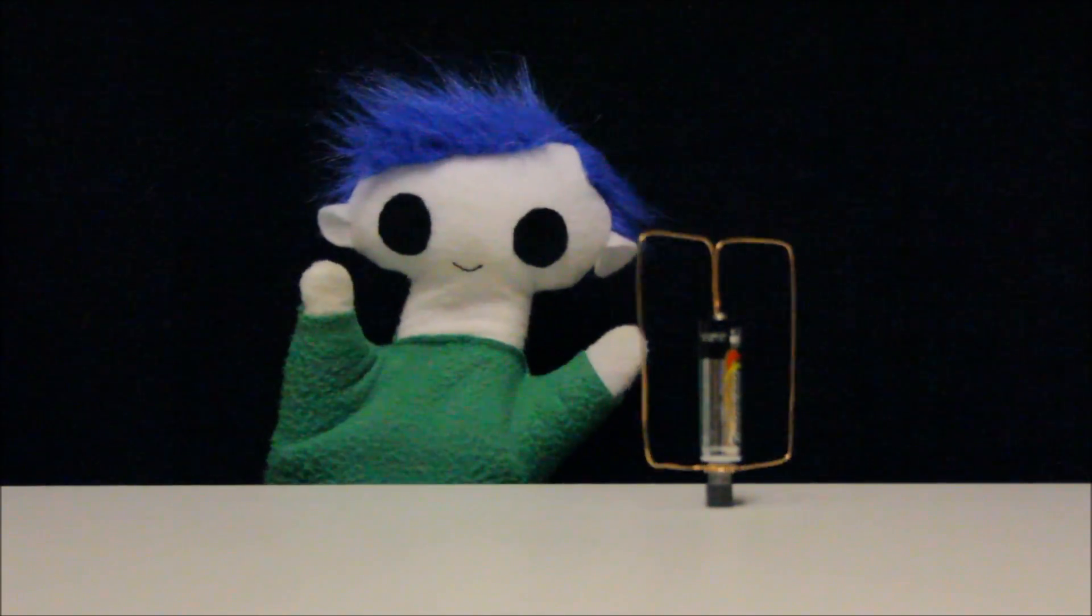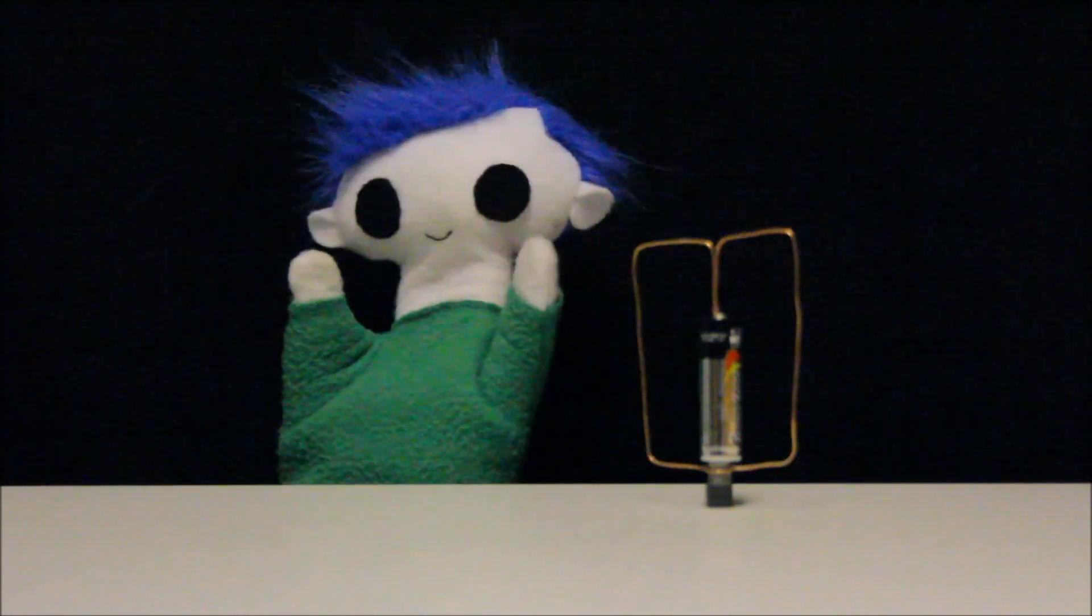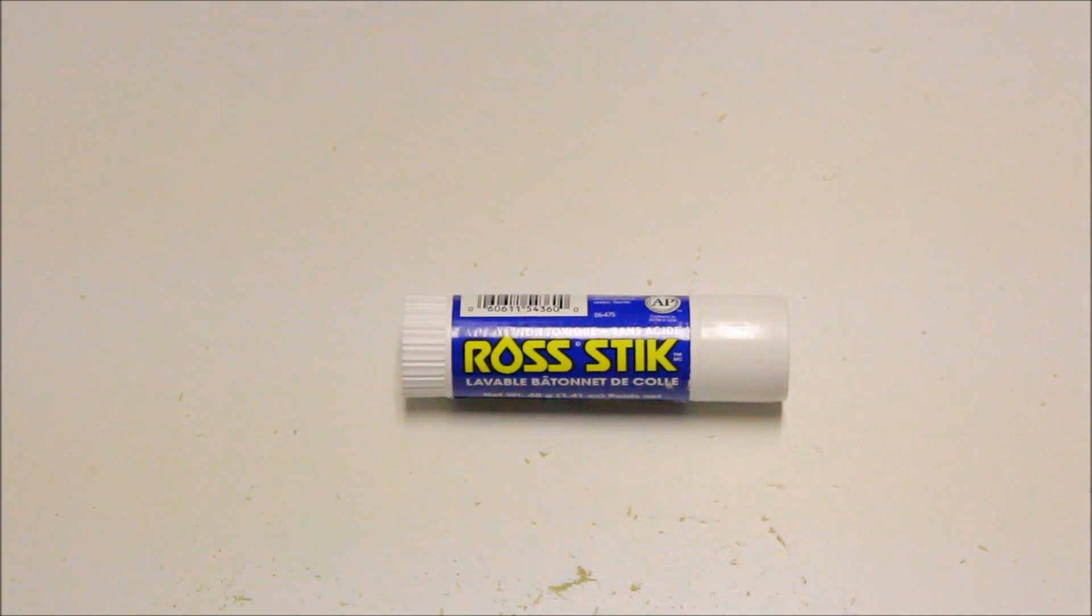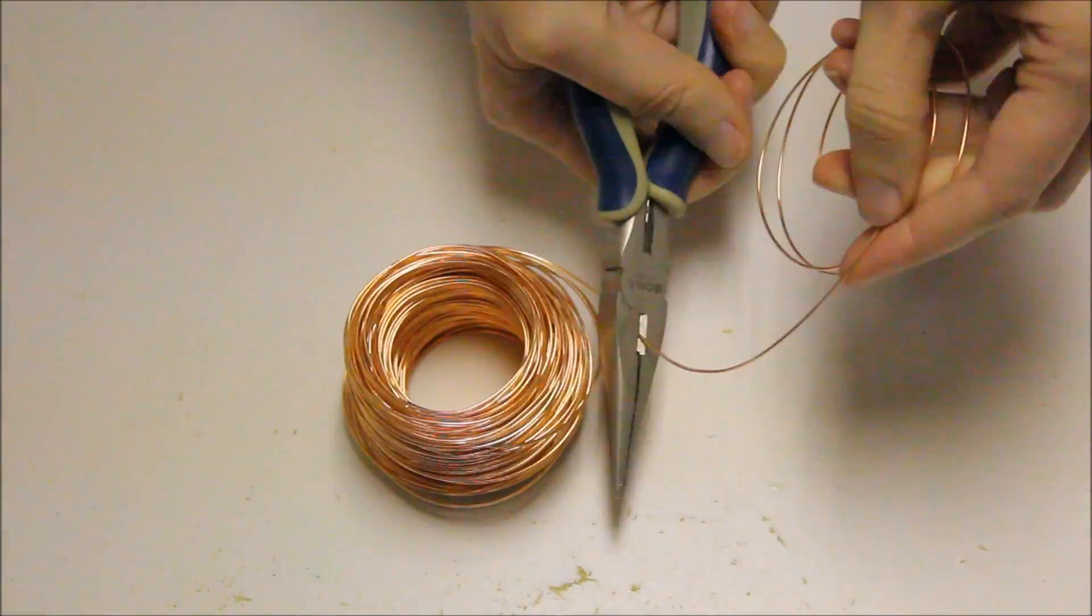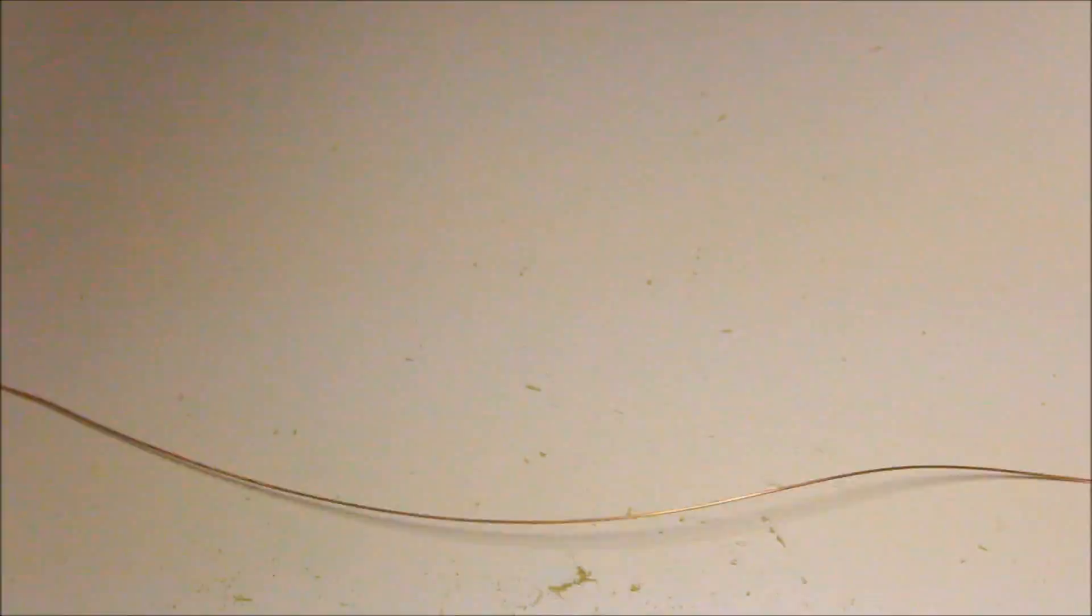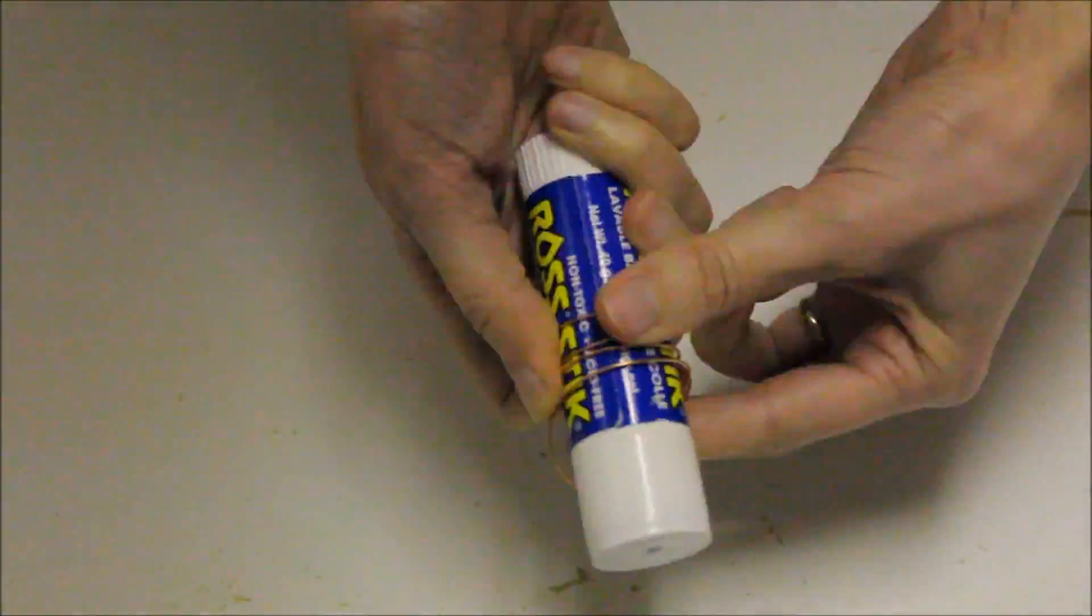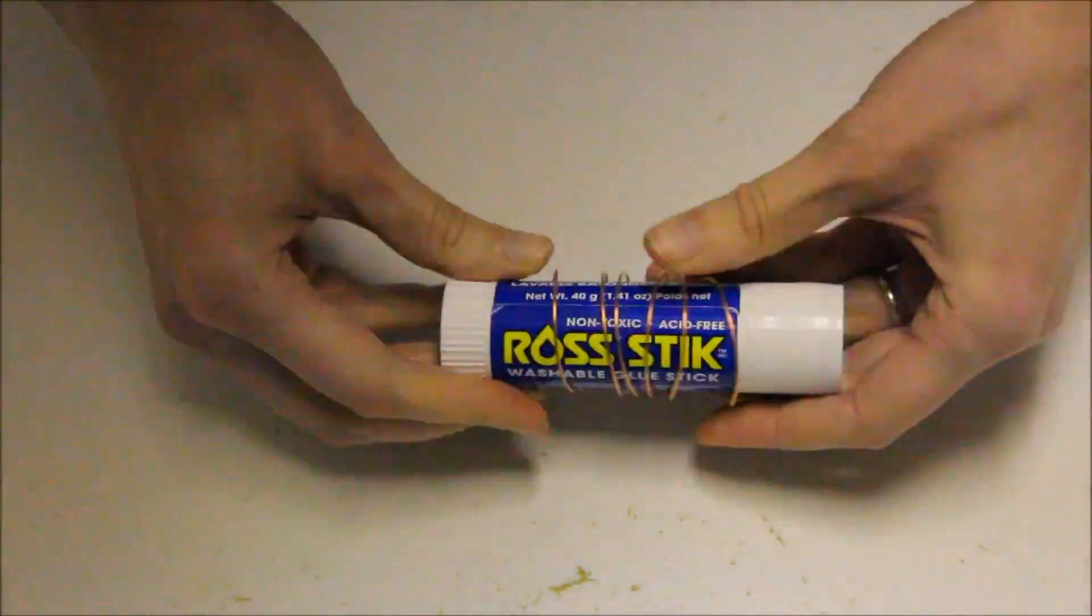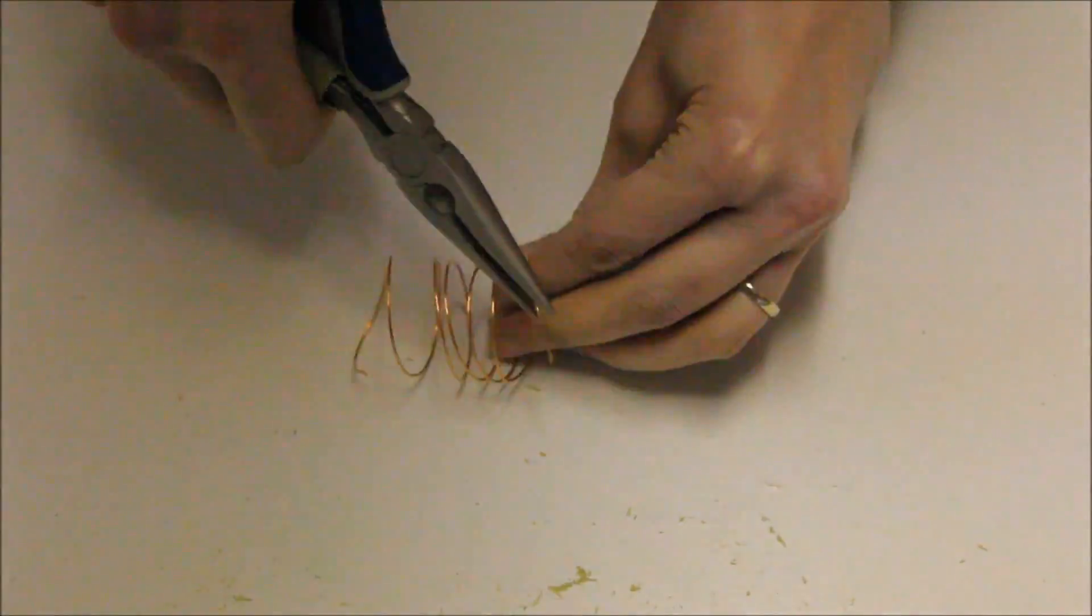Odie, do you want to make another type of homopolar motor? We can also use a glue stick to wrap the copper wire around it and make a spiral homopolar motor!